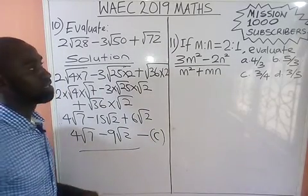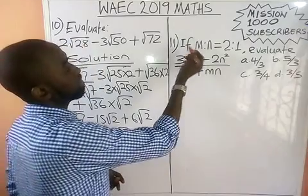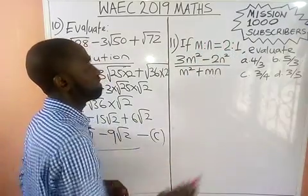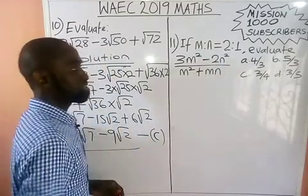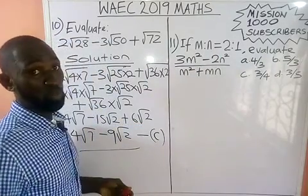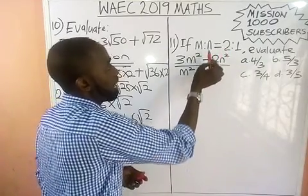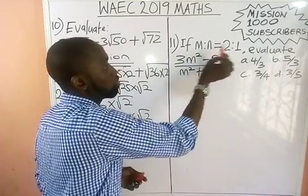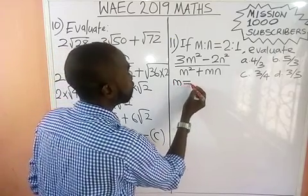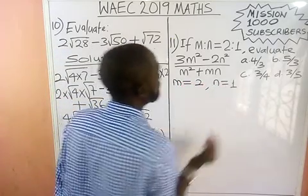Now let's go to question 11. We have: if m to n equals 2 to 1, evaluate this expression. This is an aspect of mathematics that we call ratio and proportion. Whenever we have a case like this, it means m equals 2 and n equals 1.